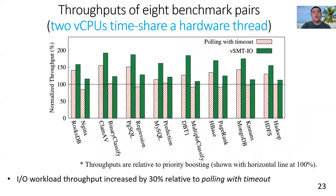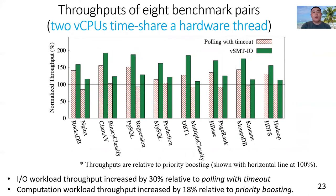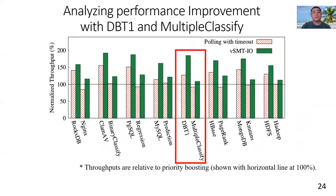We confirmed that vSMTIO can also improve IO throughput and IO efficiency when each hardware thread is timeshared by multiple VCPUs. To understand why vSMTIO can improve IO performance and IO efficiency, we choose to analyze the DBT1 and multiple classification benchmark pairs.